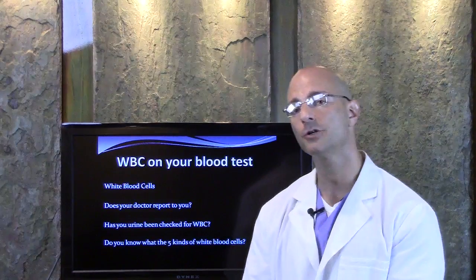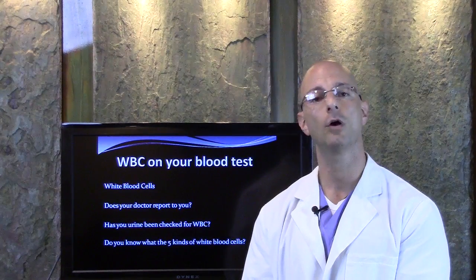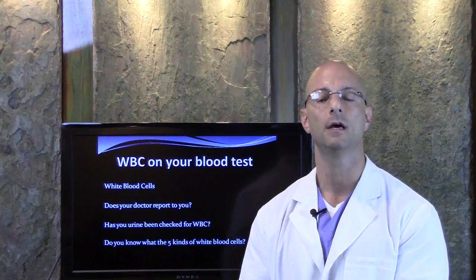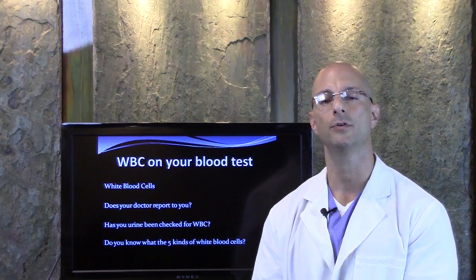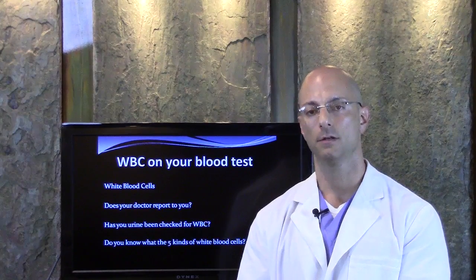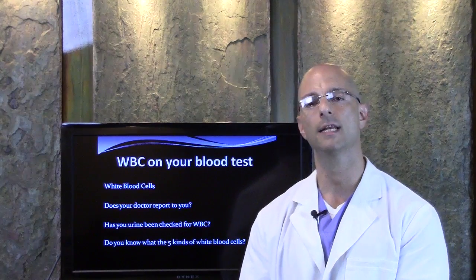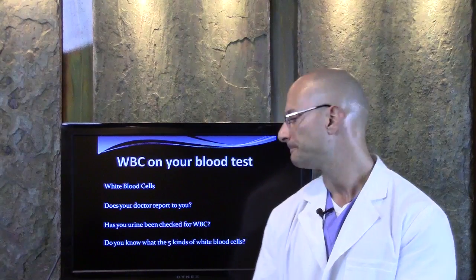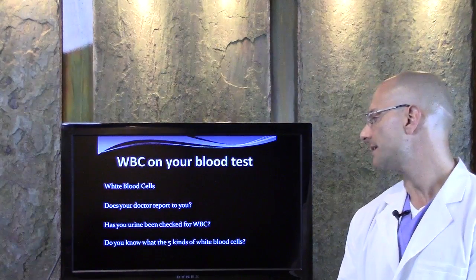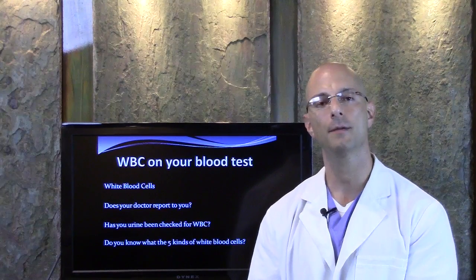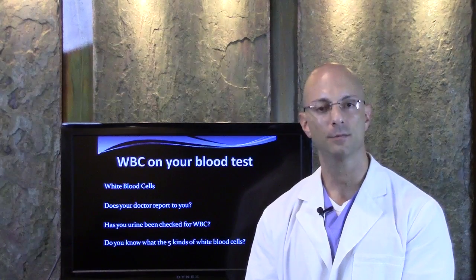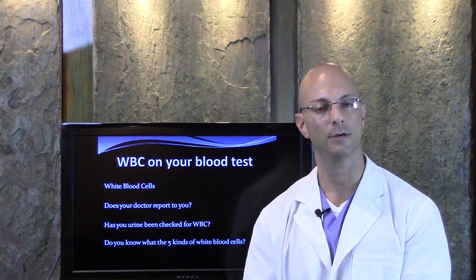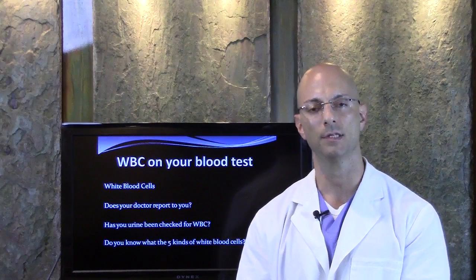Even your urine, besides your blood, can be checked for white blood cells. We could see if there's actual damage to the lining of the kidneys, to the lining of your urethra. We've got to see if there are any cells appearing in your urine that don't belong there. And the last part is: do you know the five kinds of white blood cells? People come into my practice, bring their blood test results, and we look at their thyroid and all the different markers that have been run.